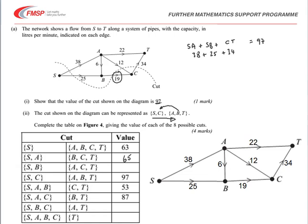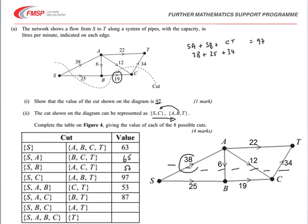When SB is the source set, we have a cut like this. We've got the 38 and the 19. The 6 from A to B is in the wrong direction, so it's just 38 plus 19, giving us 57. For cut SBC, we go with the 38 and the 34, giving a total of 72.